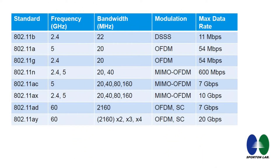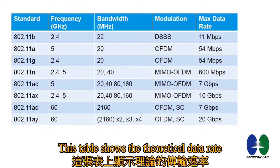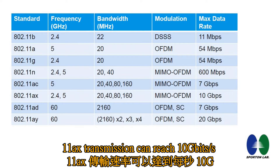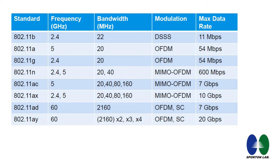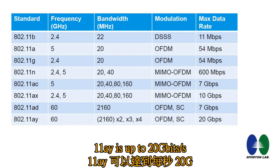This table shows the theoretical data rate. 11AX transmission can reach 10 Gbps, and 11AY is up to 20 Gbps.